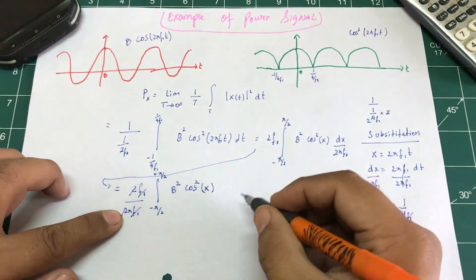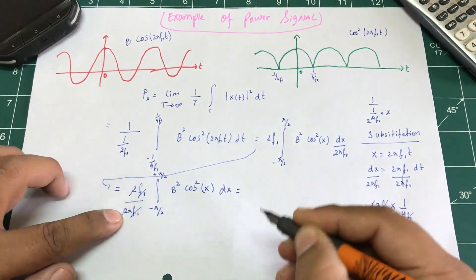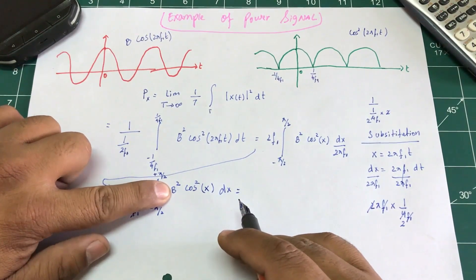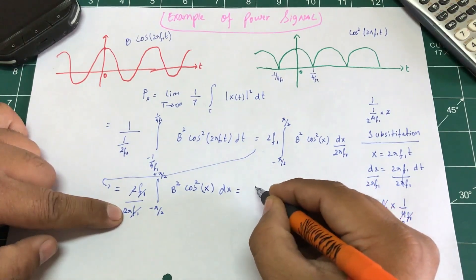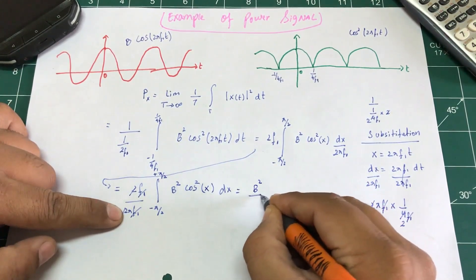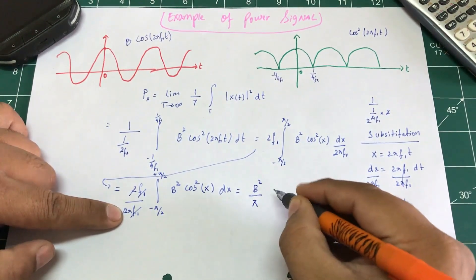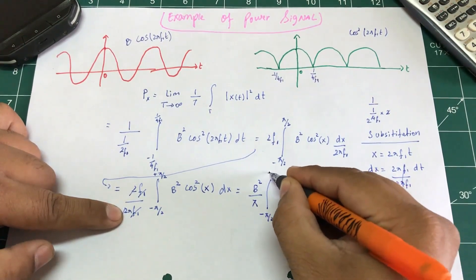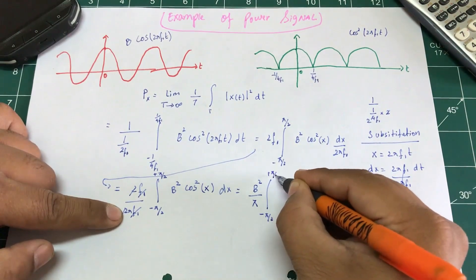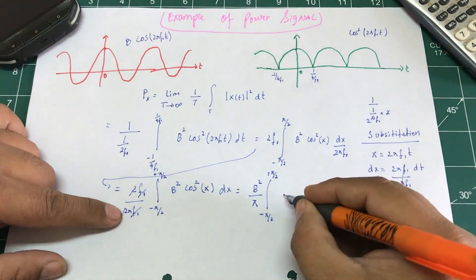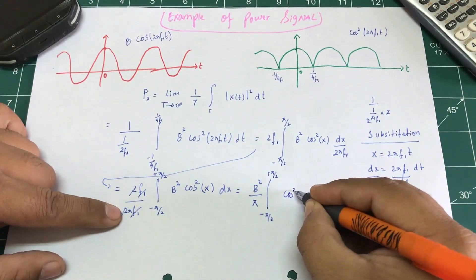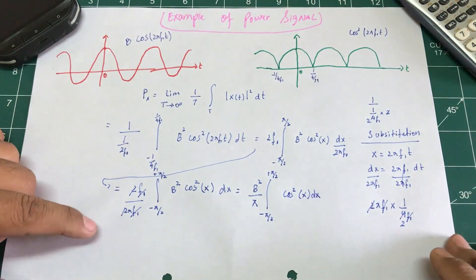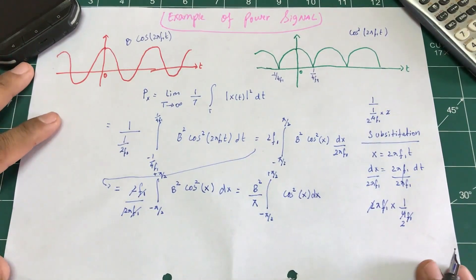I'm left with 1/π. Taking b² out as a constant, the integral becomes b²/π times the integral from −π/2 to +π/2 of cos²(x) dx.